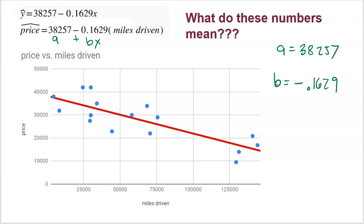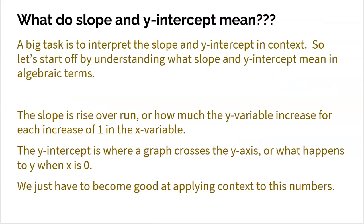Before we come back to this problem, let's look at it from an algebraic point of view. Back to algebra class for a second — what do the slope and y-intercept mean in algebra? Slope is rise over run: it's how much the y variable changes for each increase of one in the x variable. If we have a slope of five, y goes up five every time x goes up one. If we have a slope of negative three, y goes down three every time x goes up one.